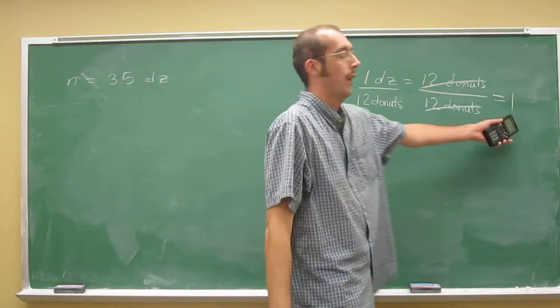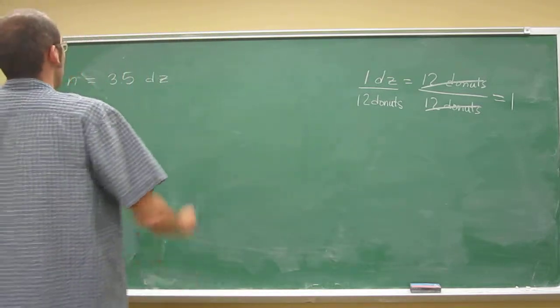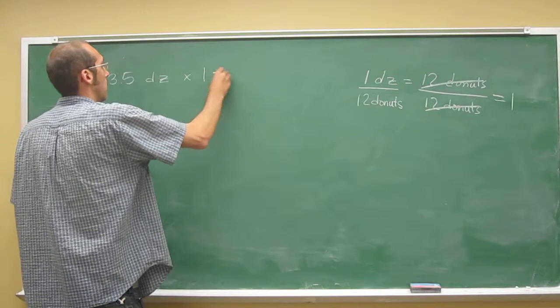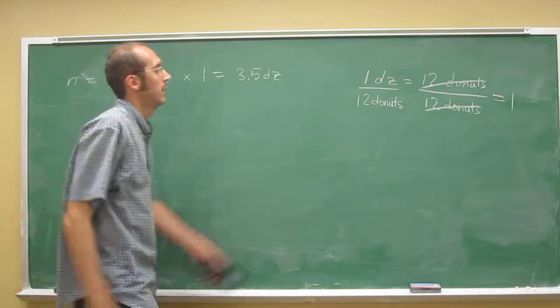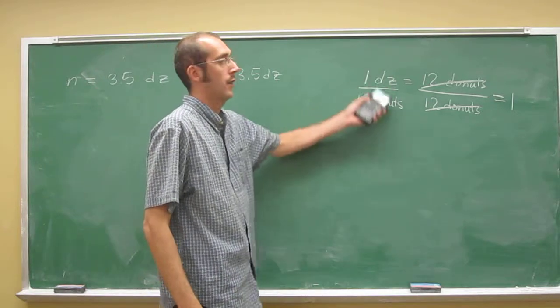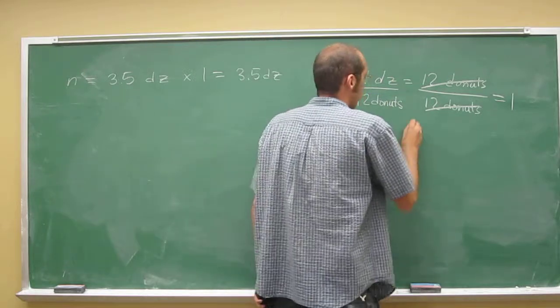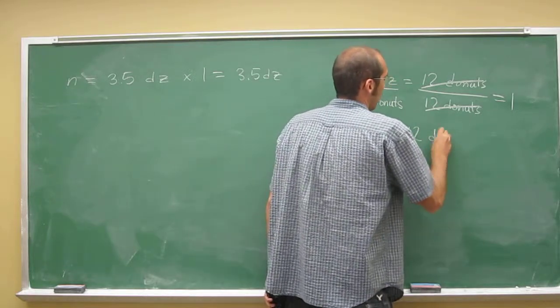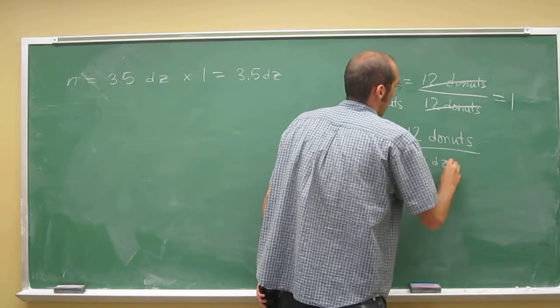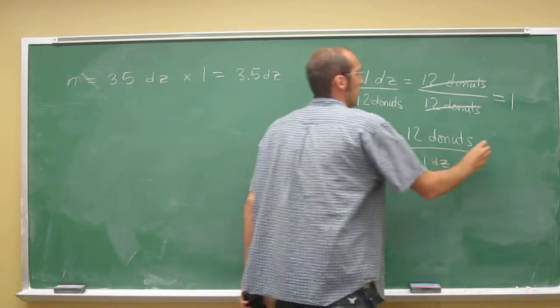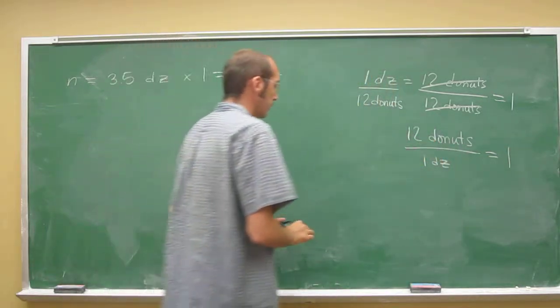So you can multiply anything by 1, remember we talked about this, you can multiply anything by 1 and it's the same thing. So, since this conversion factor is equal to 1, and so is the inverse of it, we can use those to convert from dozens to doughnuts.